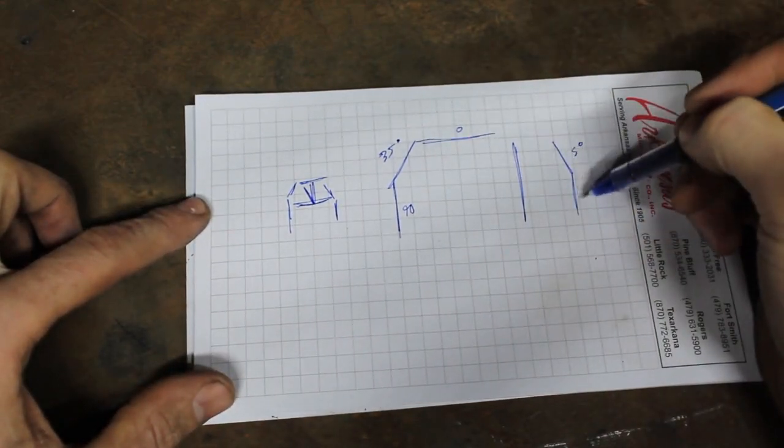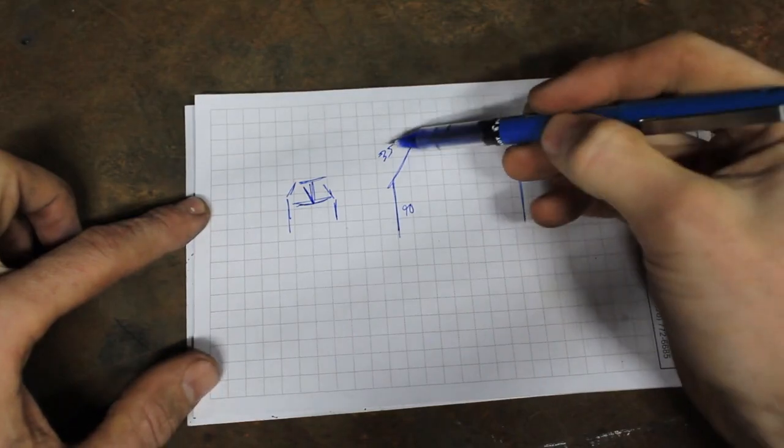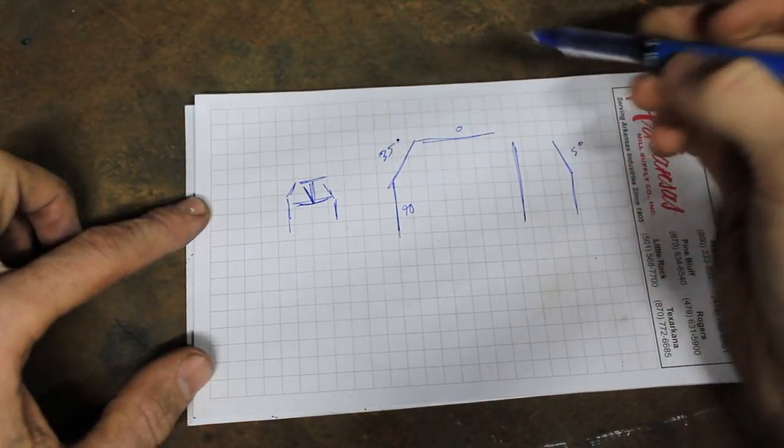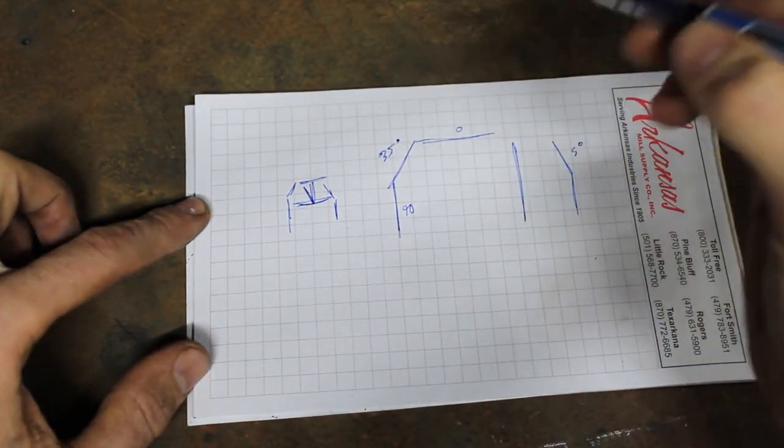How then, when we bend this five degrees into it, do we account for that to maintain a 35 degree angle here? That's actually really simple.